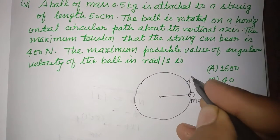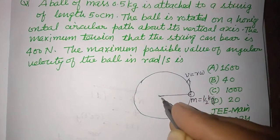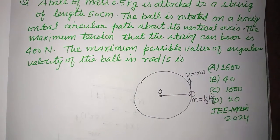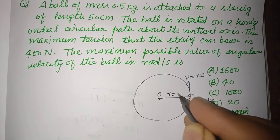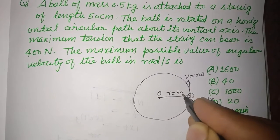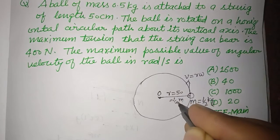It is moving with velocity V, V equal to R omega as you know. And this is the center of the path. And radius is given to us 50 cm, or which is 1 by 2 meter.